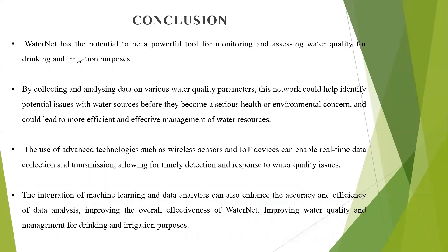Next, conclusion. WaterNet has the potential to be a powerful tool for monitoring and assessing water quality for drinking and irrigation purposes. By collecting and analyzing data on various water quality parameters, this network could help identify potential issues with water sources before they become a serious health or environmental concern, and could lead to more efficient and effective management of water resources. The use of advanced technologies such as wireless sensors and IoT devices can enable real-time data collection and transmission, allowing for timely detection and response to water quality issues. The integration of machine learning and data analytics can also enhance the accuracy and efficiency of data analysis, improving the overall effectiveness of WaterNet for water quality management.